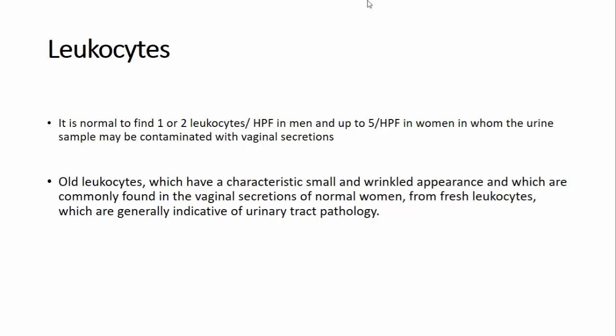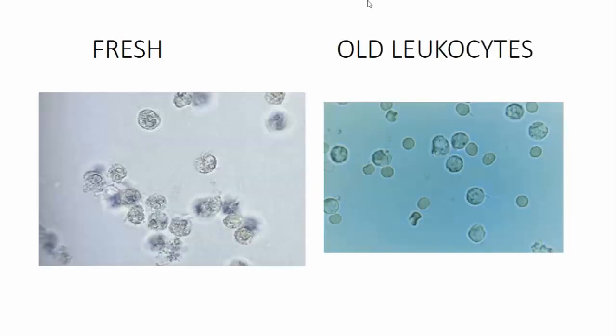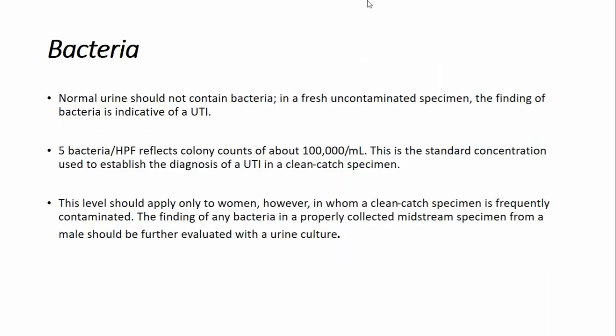Leukocytes: one to two leukocytes per high power field is normal in men, and up to five in females when the sample is not contaminated. You must distinguish between old and fresh leukocytes on microscopy. Old leukocytes — typically from vaginal contamination — are small and wrinkled. Fresh leukocytes, suggestive of active infection, are called glitter cells; they have granules in the cytoplasm that keep moving, giving the appearance of a glittering cell.